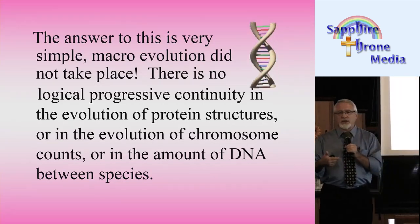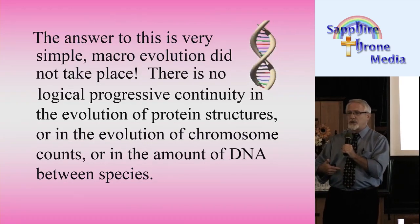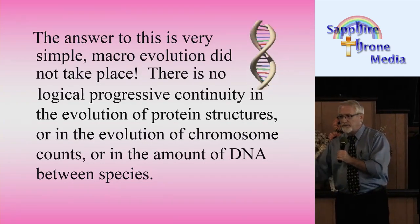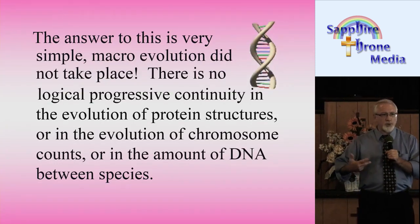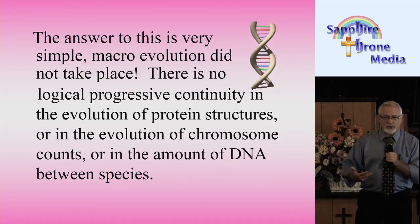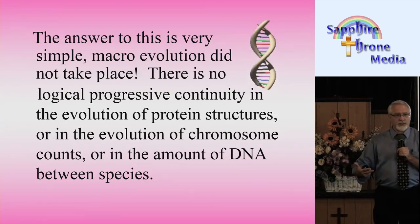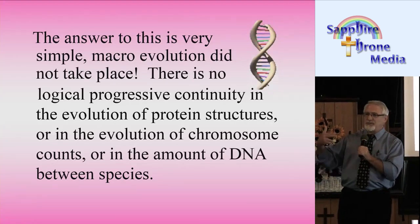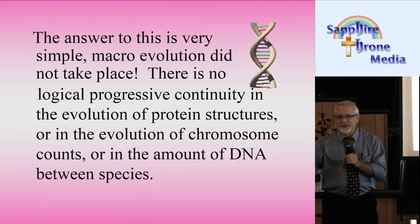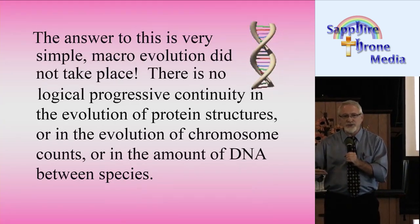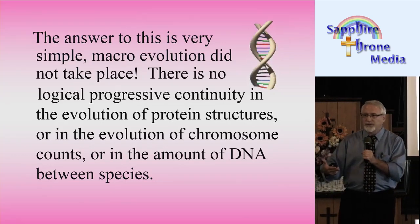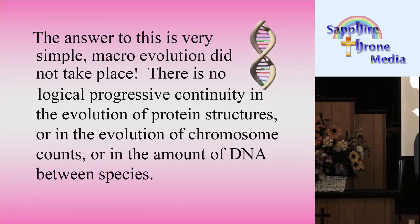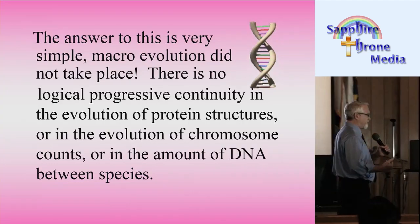If animals live in hot environments, chances are they don't have as heavy a coat as those in cold environments. A sheep in South America is the same as a sheep in Alaska — still a sheep. They might have a different coat for protection from the elements, but they're still a sheep. This is called micro evolution.